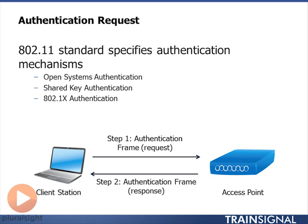If this access point is open and has no authentication mechanisms on it, I would send an open system authentication request. In that case, I would get an authentication frame response, and if the access point is not too heavily loaded, it will confirm that I have authenticated with that access point.